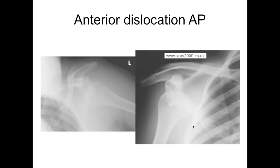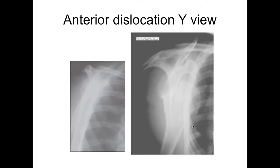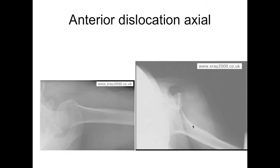Just quickly — on the AP view, the humeral head looks like it's outside the glenoid. The Y view on the left shows it sitting right in the middle of the Y. On the right, it's really going towards the coracoid, which is typical of an anterior dislocation. On the axial view, here's normal — it's sitting inside the glenoid fossa. And here's the glenoid right here, with the humeral head right outside.